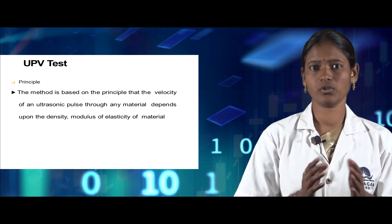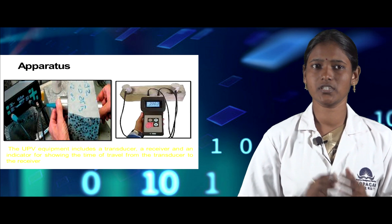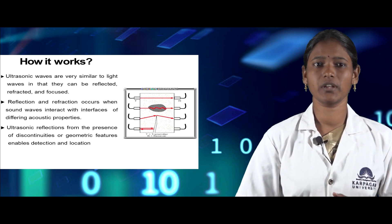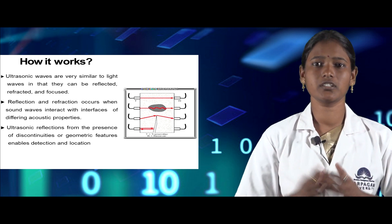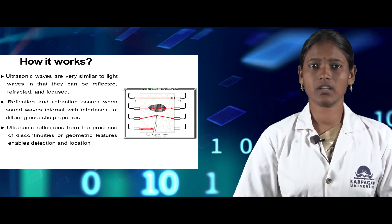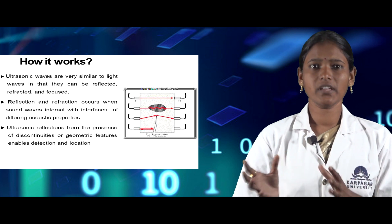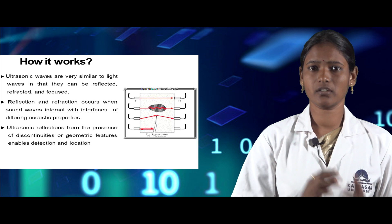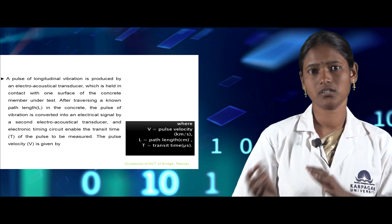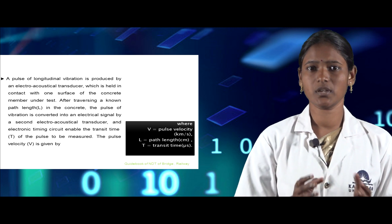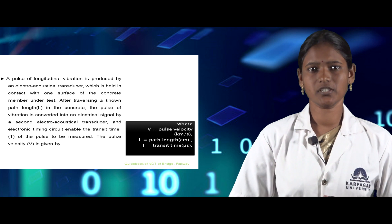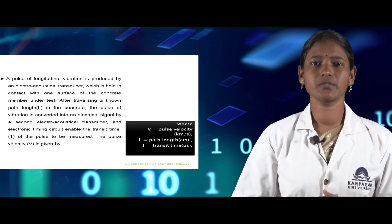Ultrasonic waves are similar to light waves in that they get reflected, refracted, and focused. Reflection and refraction occur when sound waves interact with interfaces of different acoustic properties. Ultrasonic reflections from discontinuities or geometric features enable detection of defects and their locations. A pulse of longitudinal vibration is produced by an electroacoustical transducer held on the surface of the concrete, and after traversing a known length, it is converted into an electrical signal by another transducer. The electronic timing circuit captures the transit time of the pulse, and this is how pulse velocity is measured.